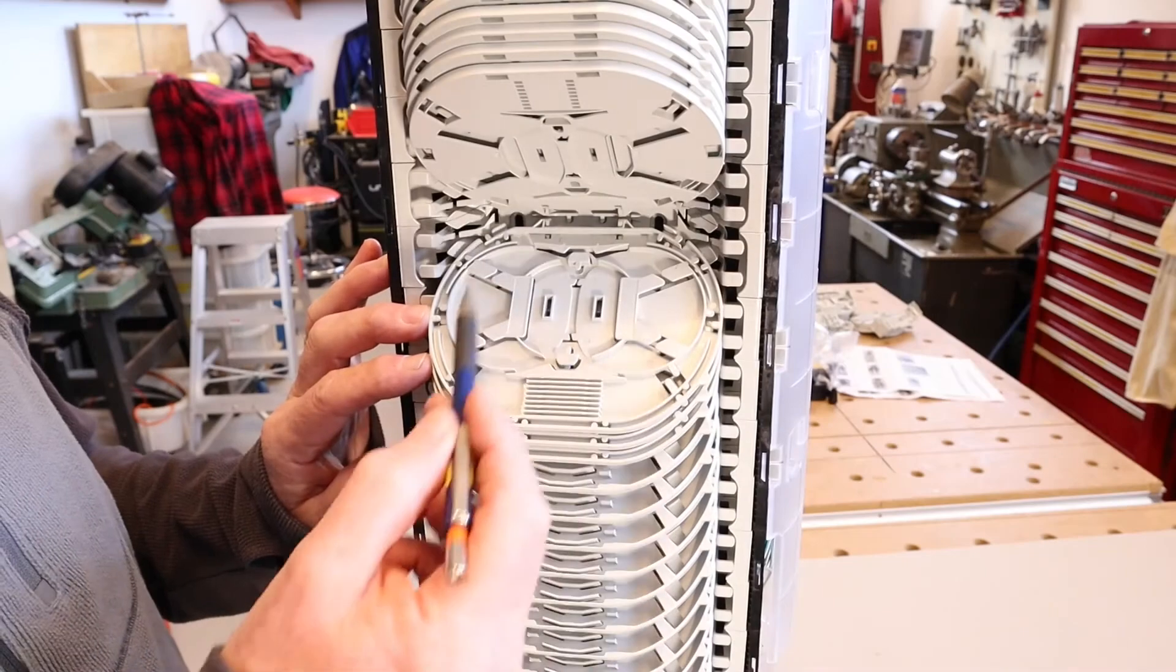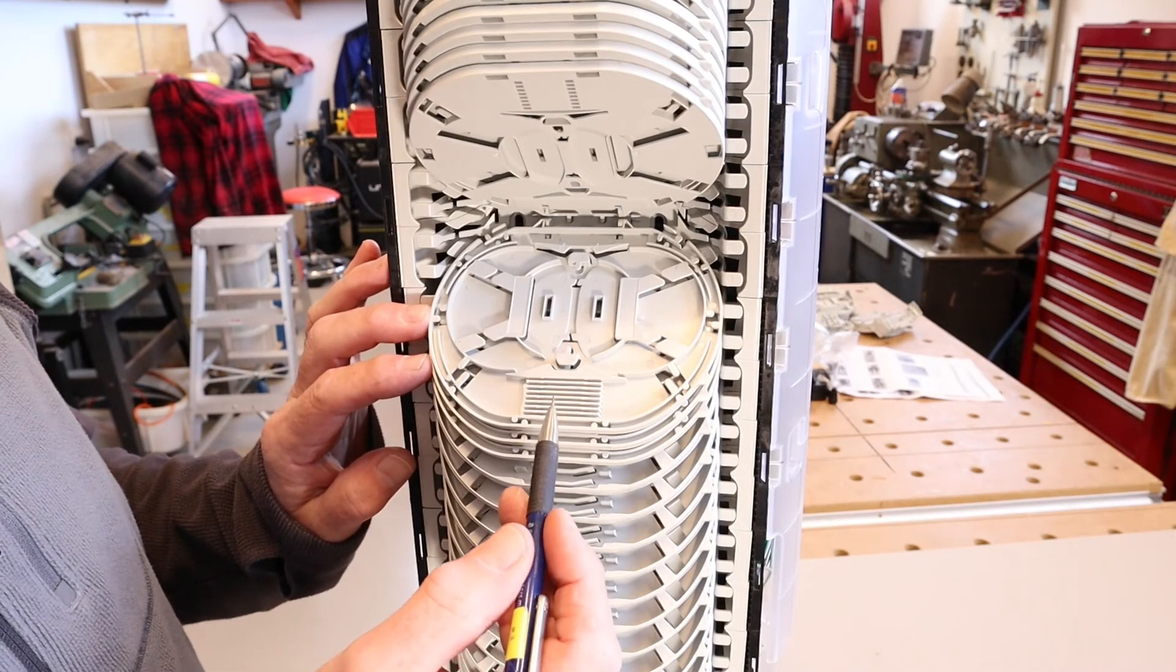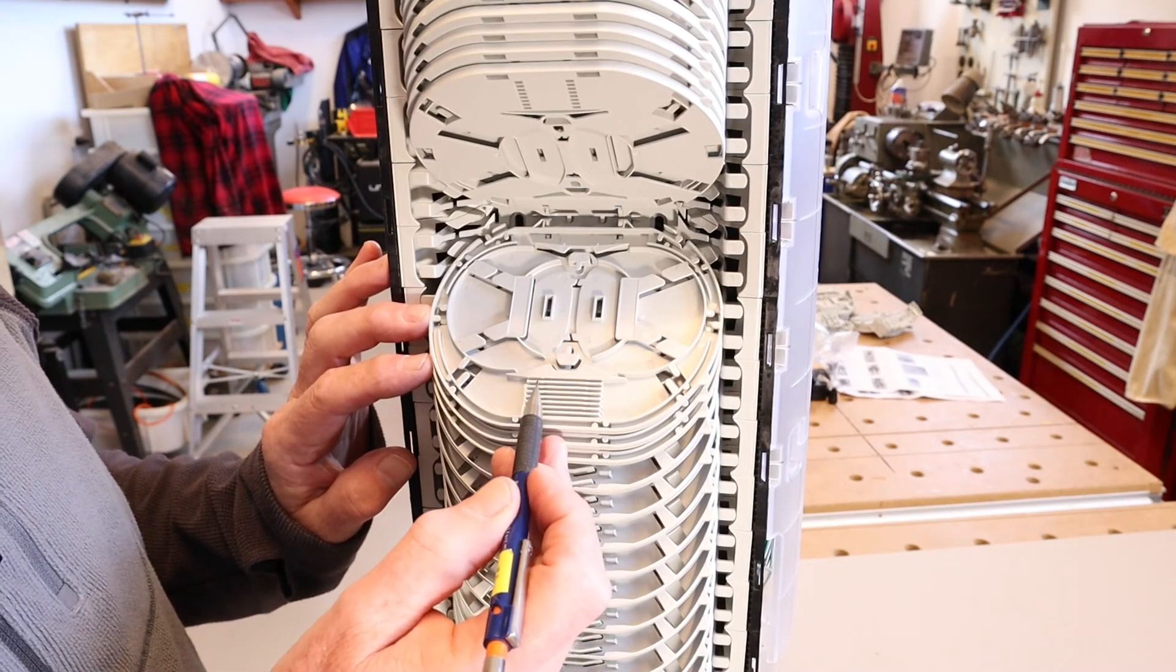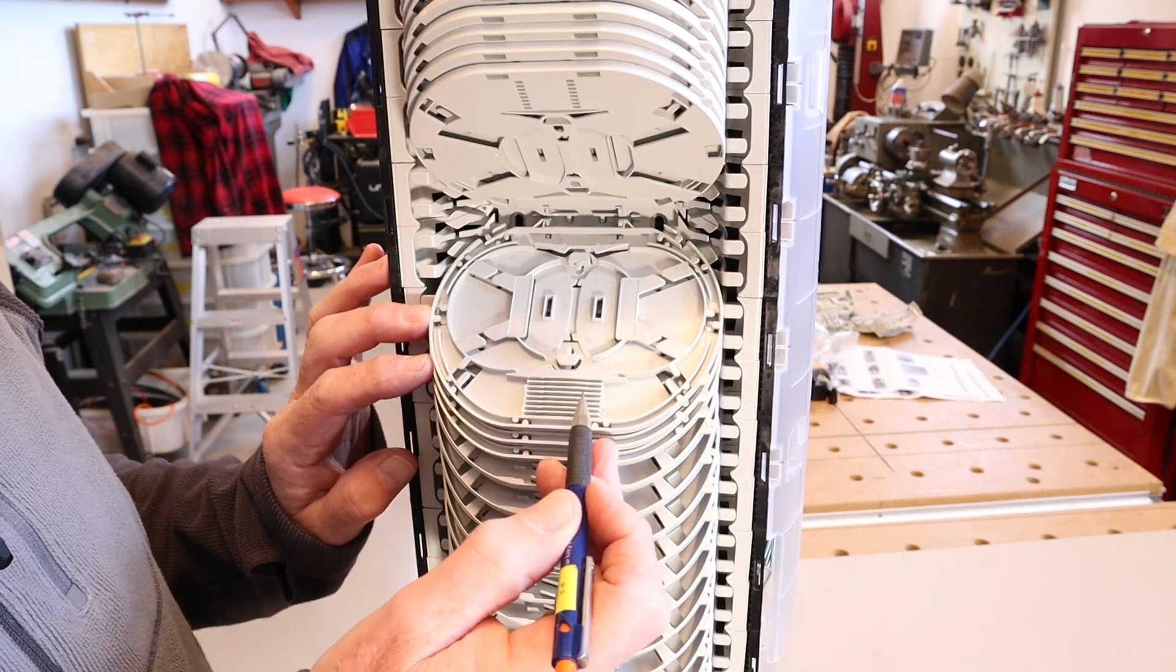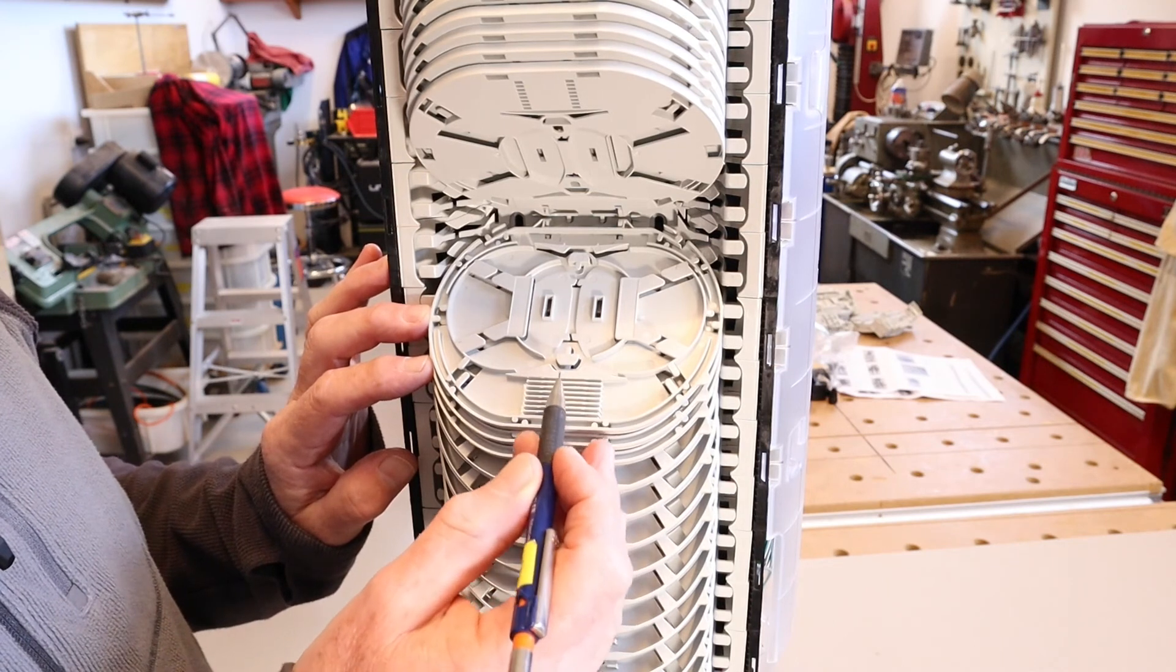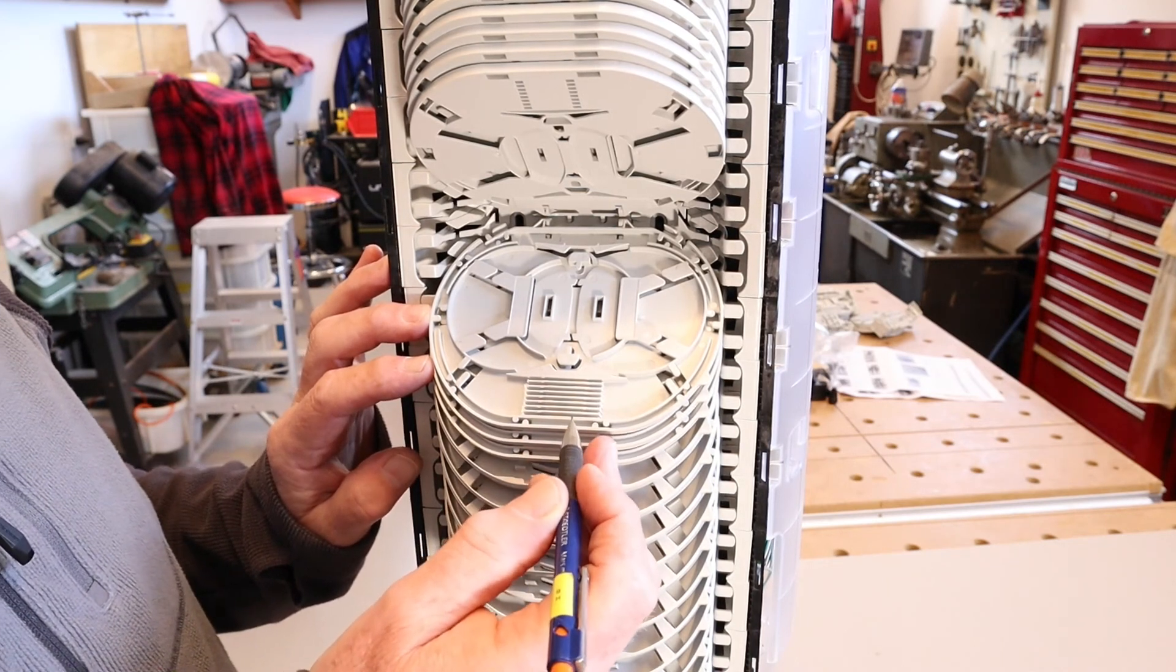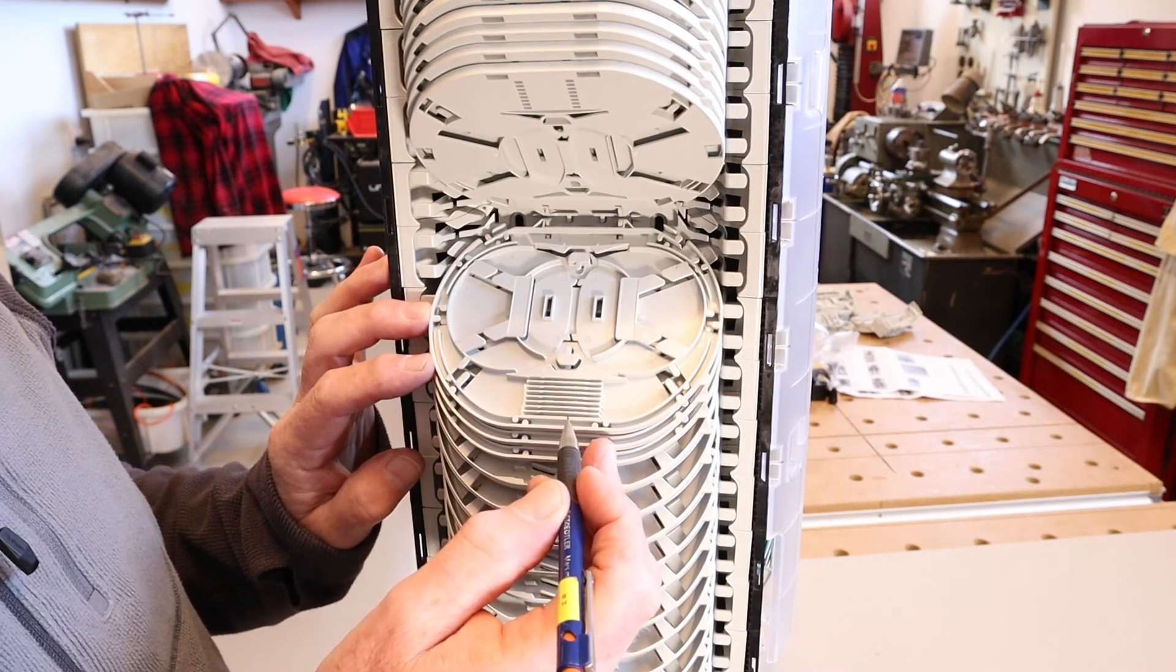This particular tray here is for 24 splices and you'll notice down here there are eight tracks to retain the fiber splice protectors. So they stack three deep and there are eight, so it's 24, and this particular size uses the 1.3 by 30 millimeter splice protector.